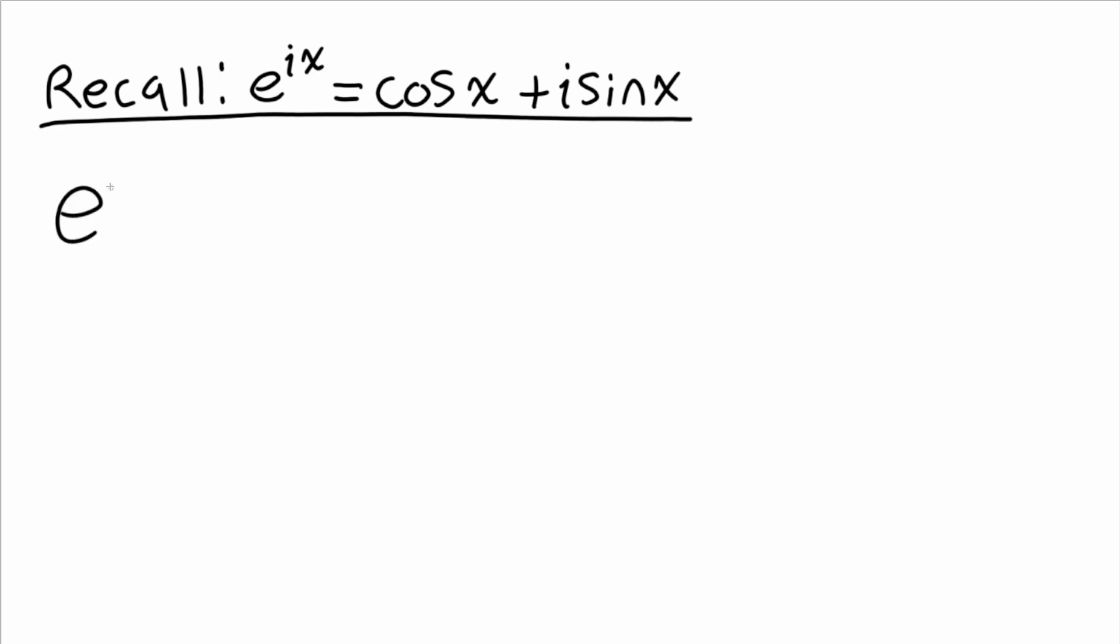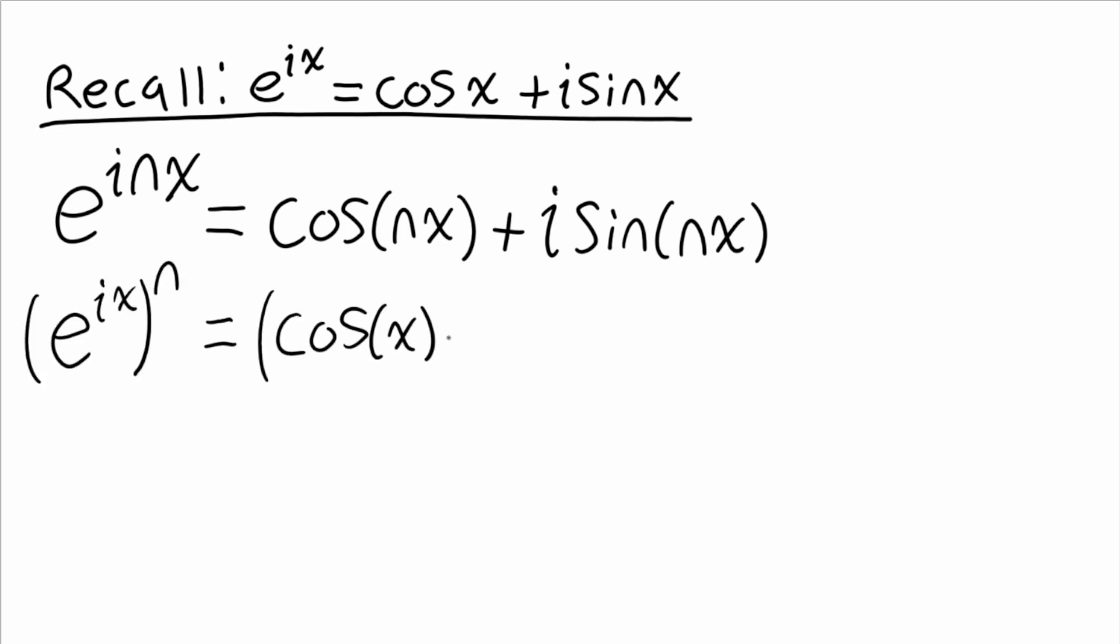Now without further ado, we're going to start off with demonstrating de Moivre's formula. I think it's clear that we can replace all the x terms with nx terms without any issue in Euler's formula. And using exponent rules, we can show that cosx plus i sinx raised to the nth power is equivalent to all the previous expressions.